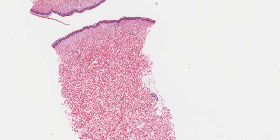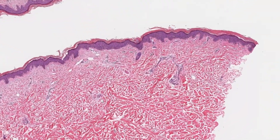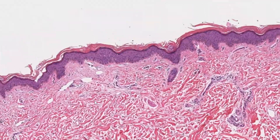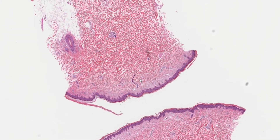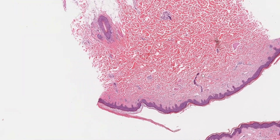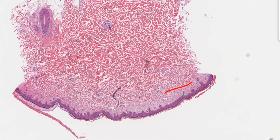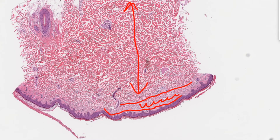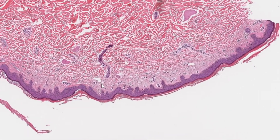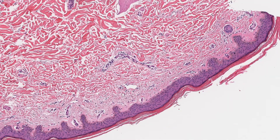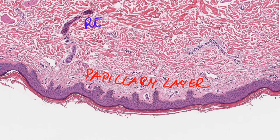In the dermis we have a bunch of pink lacy stuff — this is called collagen. We can distinguish two arrangements: one that is denser and looks paler pink, and the rest that looks a bit lazier and looser. These two layers are called the papillary layer and the reticular layer.